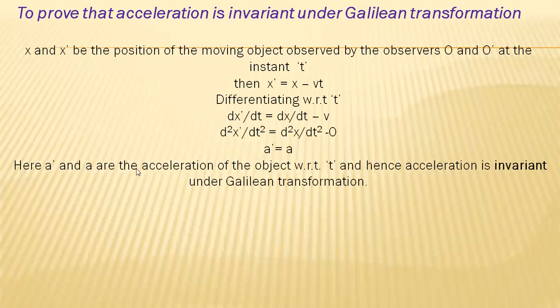Here a' and a are the accelerations of the object with respect to the two frames, and hence acceleration is invariant under Galilean transformations. For example, if you apply the same force on two objects of equal mass — one on the ground and one in a moving vehicle — the acceleration measured in both frames is the same.